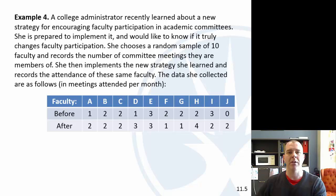Alright, next example. College administrator is trying to encourage faculty participation on academic committees. And she's prepared to implement it and wants to know if it actually changes faculty participation. So she has 10 faculty and records the number of committee meetings they are members of. That doesn't make sense. Maybe committee meetings they attend or committees they are members of. So then she has this new strategy, and then she records the attendance again for those same faculty. Seems kind of draconian in my opinion. Who made up this example anyway?